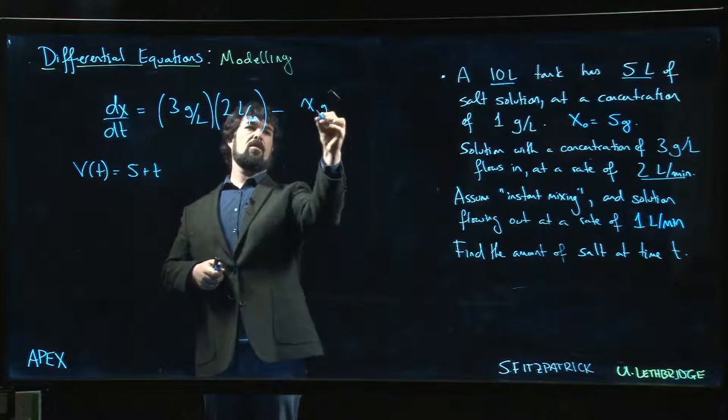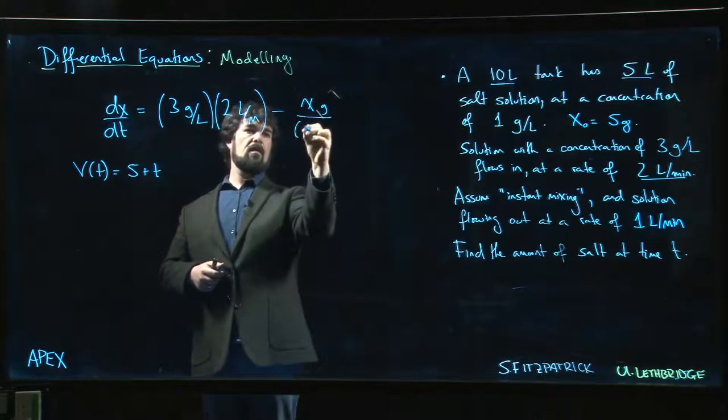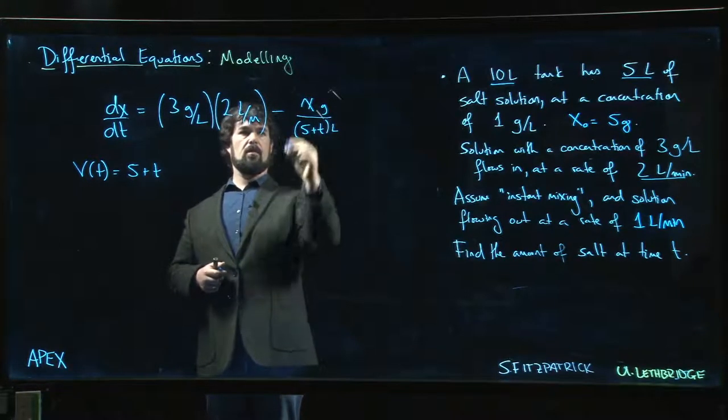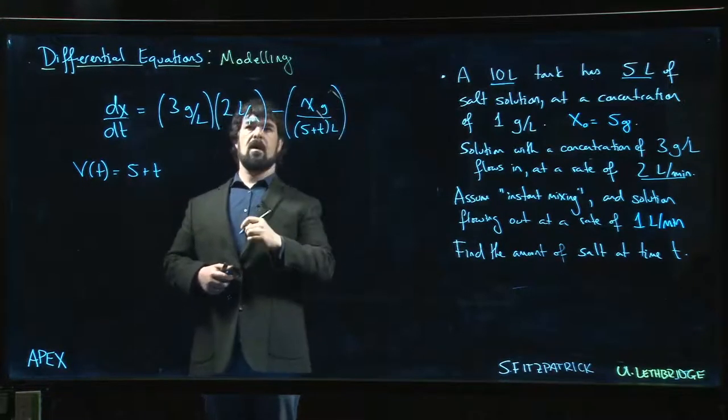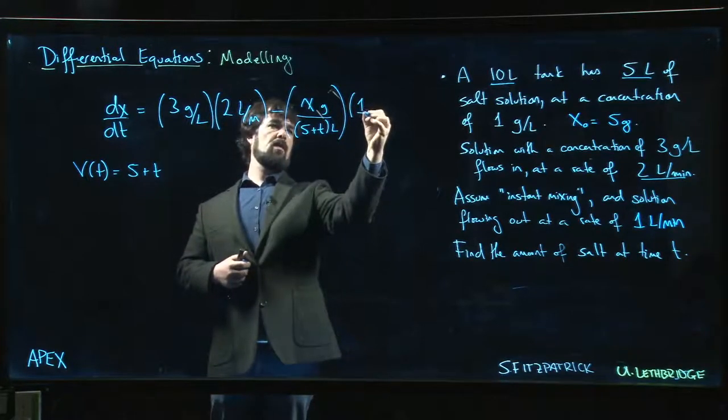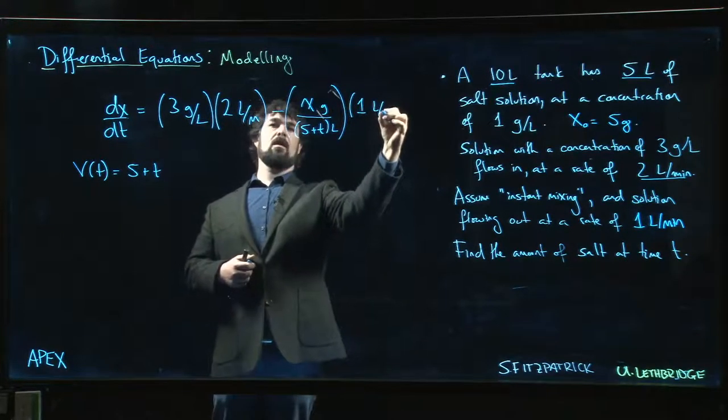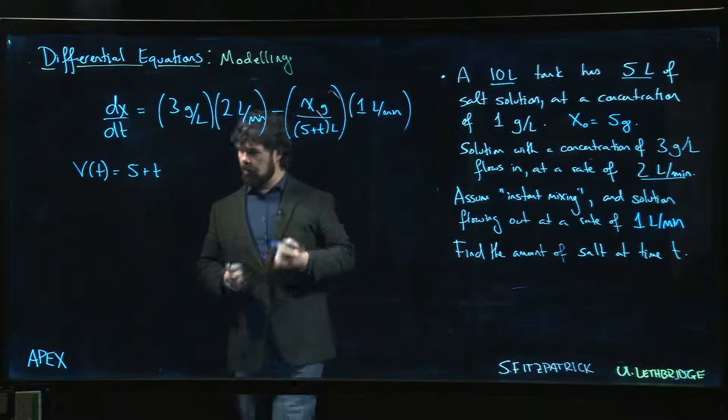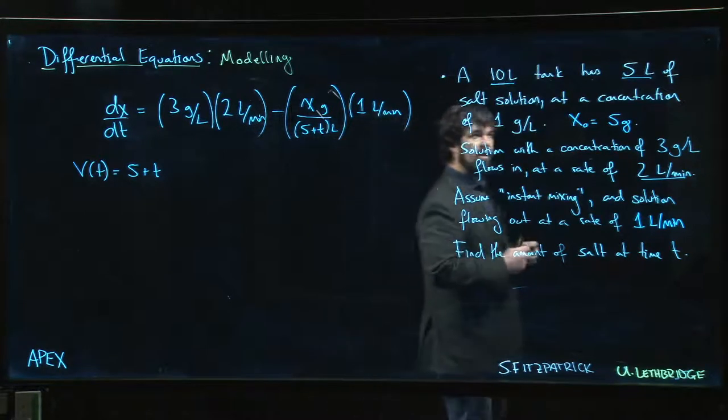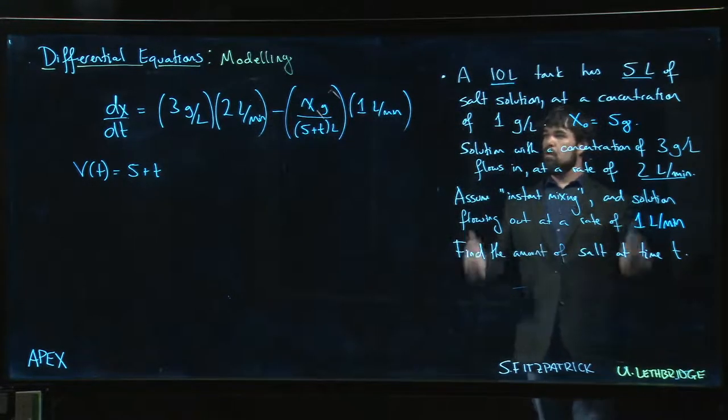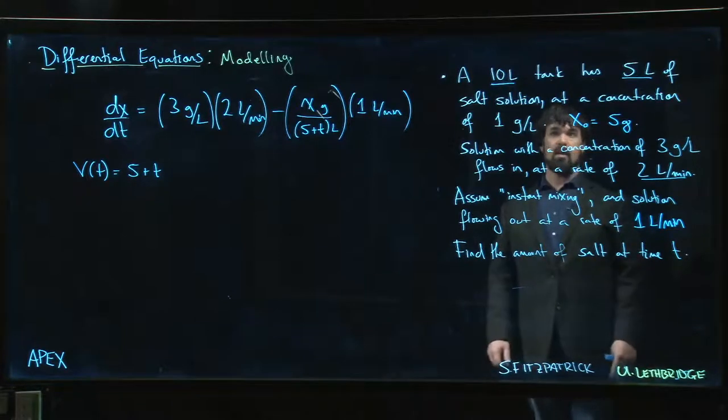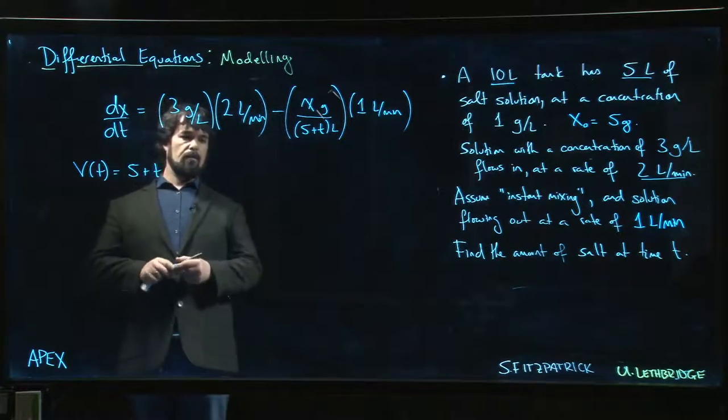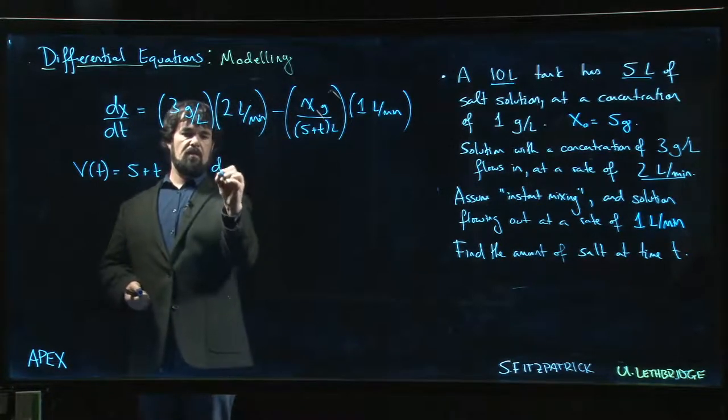divided by 5 plus t liters, and we multiply by the rate, which is 1 liter per minute. Now, if we're dealing with a 10 liter tank, then this is a problem we can only really run for 5 minutes. After 5 minutes, the tank is full and this isn't a good model anymore, but at least it gets us started.